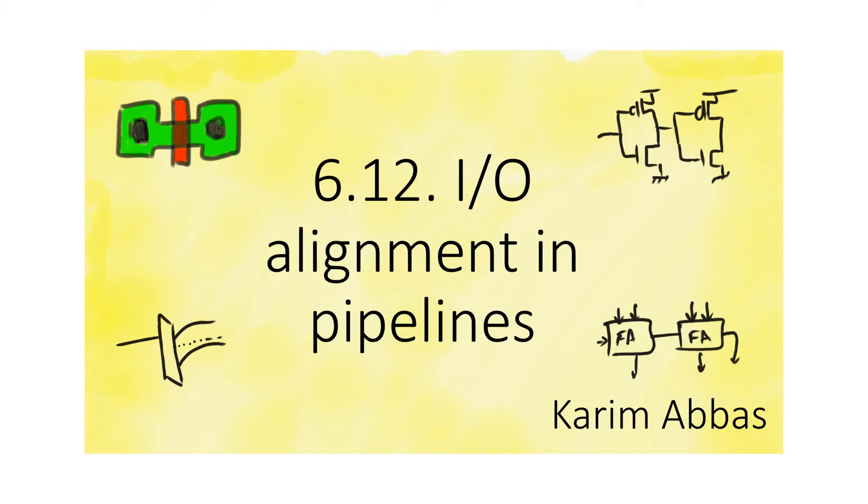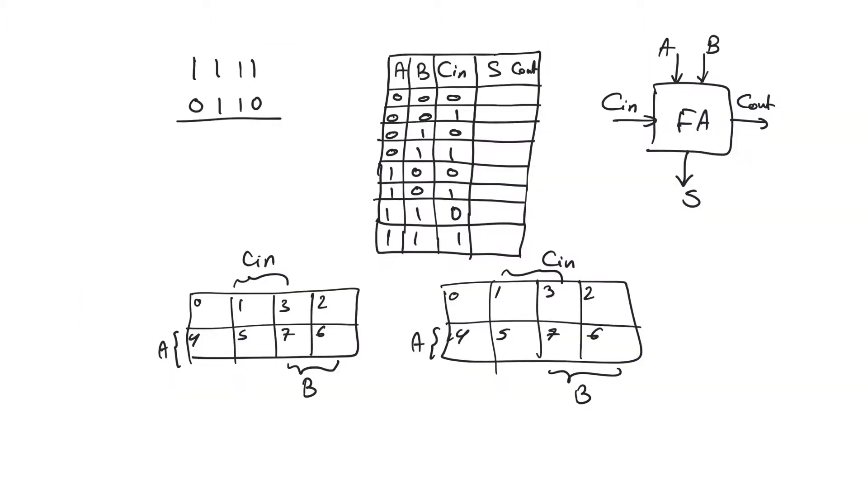When we pipeline a circuit, we often need to add shift registers at the inputs and outputs to align them so that they produce meaningful results. In this example, we will design a 4-bit adder, and then we will internally pipeline this 4-bit adder to increase its operating frequency. Then we will add additional registers in order to align the inputs and outputs of the adder.